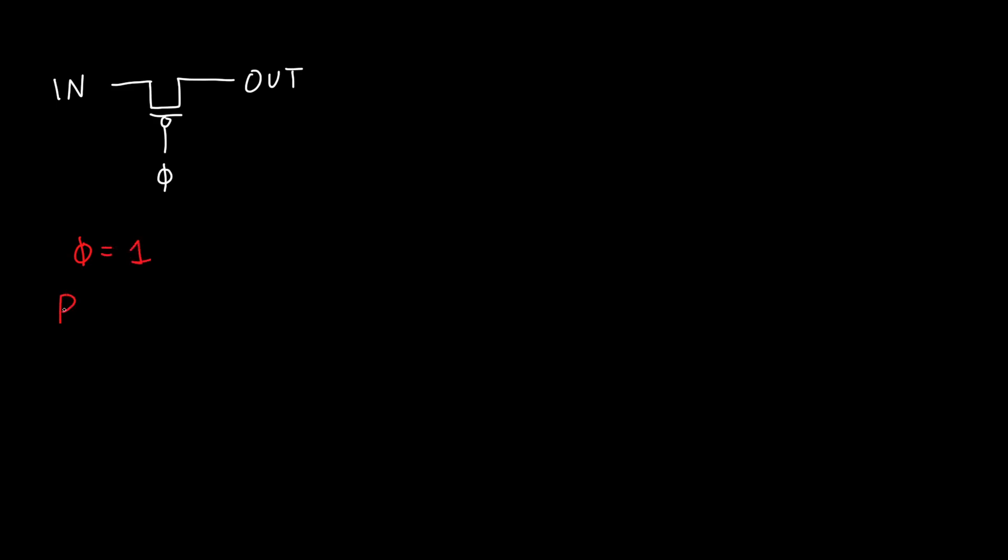Well, then the PMOS is just off. And it doesn't matter what the input is equal to or the output, our transistor is always going to be off. And so it acts like the open circuit that we want. It isolates the input from the output.